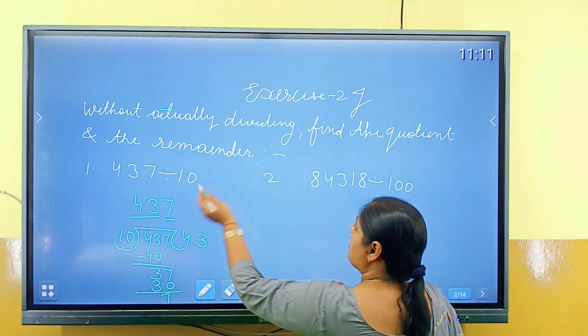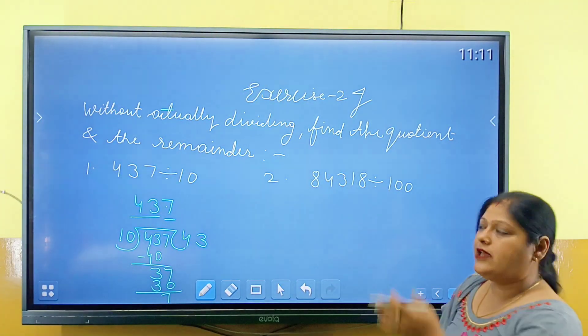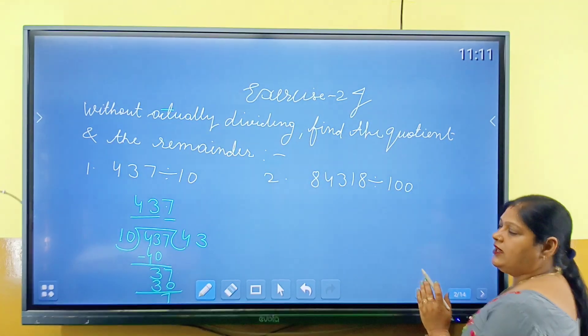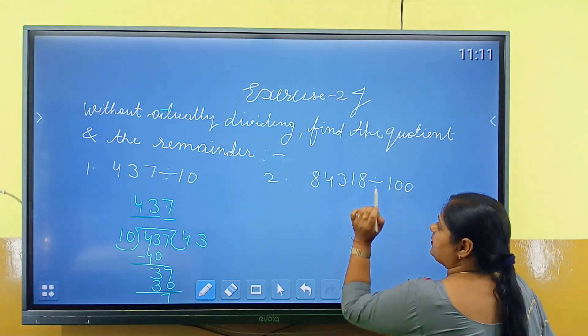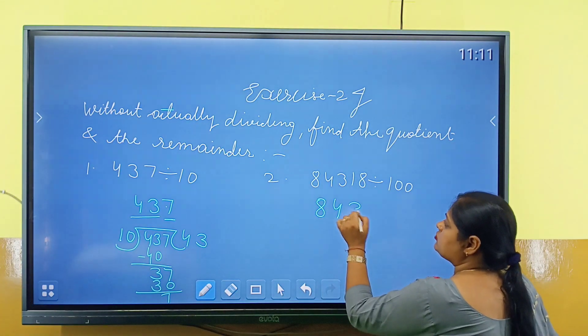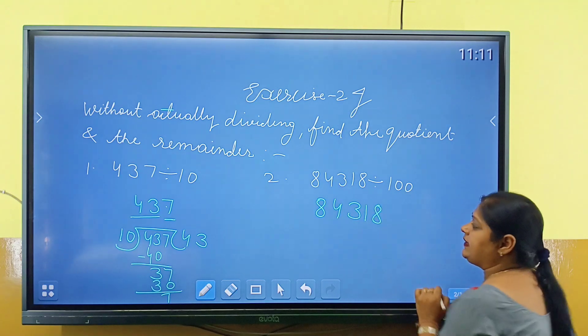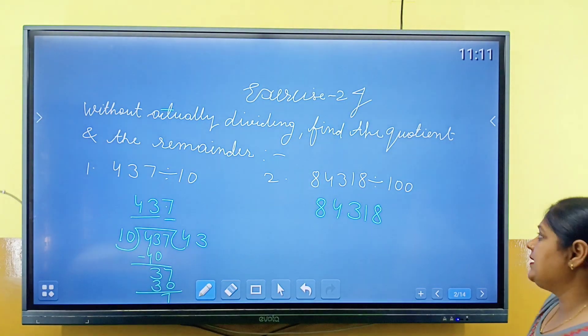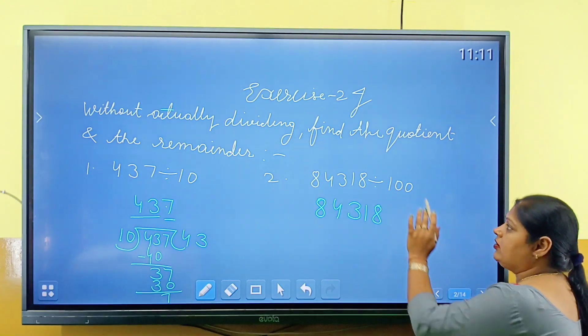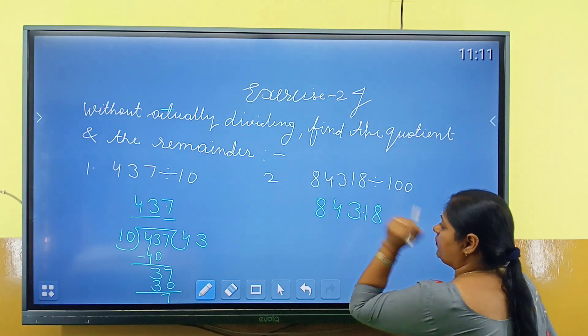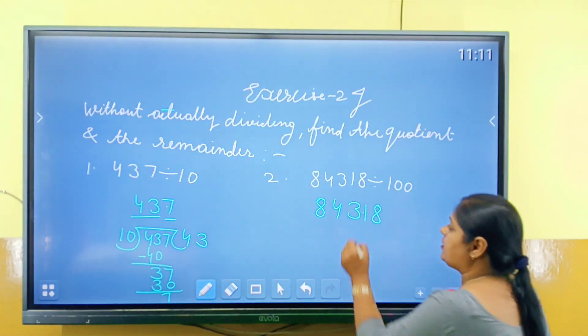Next, while ye tens tha, ab while hundred hain. To isme student two zeros hain, to hum kya karenge right side se, two zeroes ko chhod kar point laga sakti hain. Hamara number hai 84,318. Isko divide karna hai kis se, hundred se. Toh aap kya karenge, one two, one two.